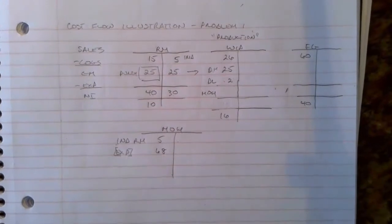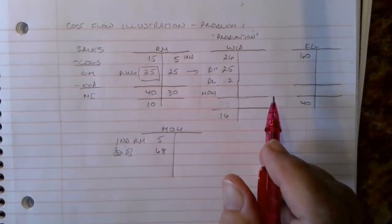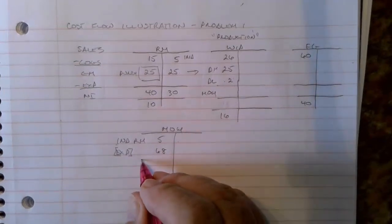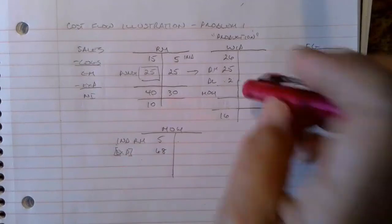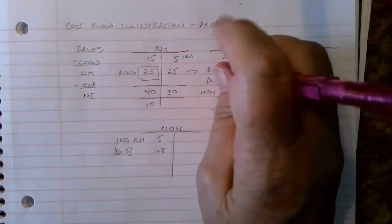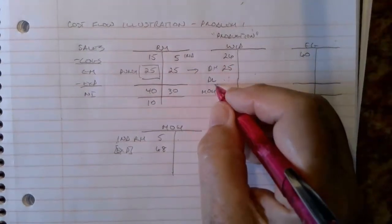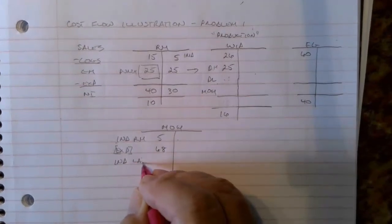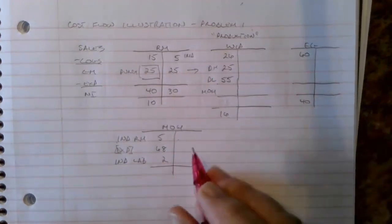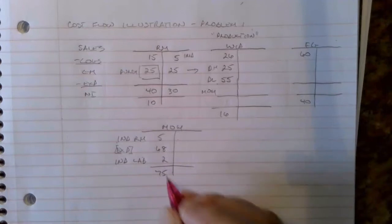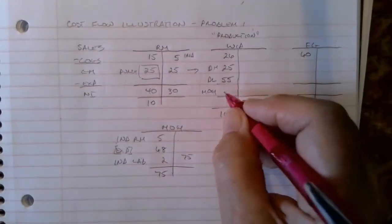So manufacturing overhead would go here. I've got five dollars and sixty-eight dollars in overhead. We had indirect labor, so indirect labor was two dollars. And what was our direct labor? Direct labor was fifty-five dollars. I can just imagine everybody at home telling me how wrong I am. So that means our manufacturing overhead is seventy-five dollars. Seventy-five comes out and goes into work in process.